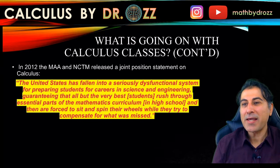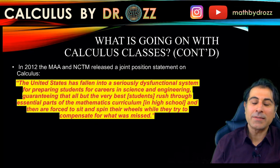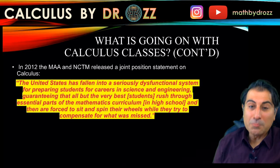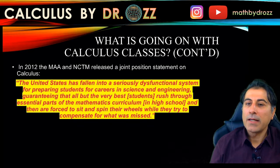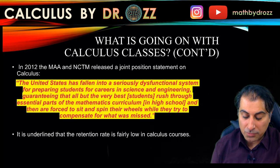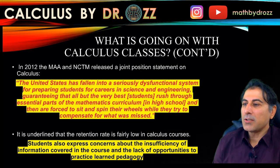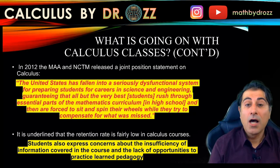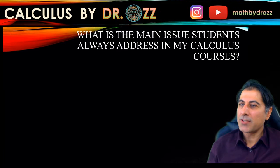Two years after, MAA and NCTM — the National Council of Teachers of Mathematics — released a joint position statement. The main theme was that students coming from high school are simply unprepared and are forced to rush through the mathematics curriculum, trying to compensate in college for what was missed. One part of the report was shocking: students expressed concerns about the insufficiency of information covered in the course and lack of opportunities to practice the material.